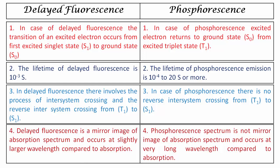In case of phosphorescence, the spectrum does not have any mirror image relationship with the absorption spectrum. Since the transition involved is from T1 state to S0 state, it occurs at a very long wavelength compared to the absorption spectrum. This is because during inter-system crossing and internal conversion, some energy is dissipated. Since energy decreases, wavelength increases; therefore phosphorescence occurs at a very long wavelength compared to absorption.